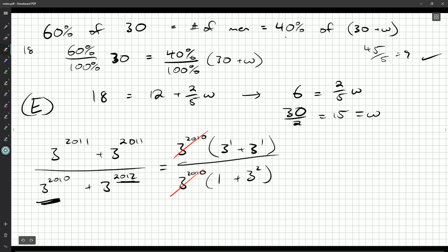But then we realize, oh, these cancel out! That's great! So now I'm left with 3 plus 3, or 6 on top, and 1 plus 9. 3 squared is 9, so 1 plus 9, 10 on the bottom.